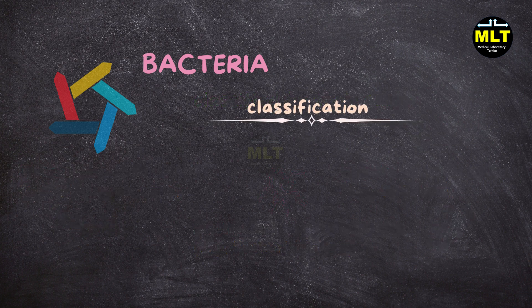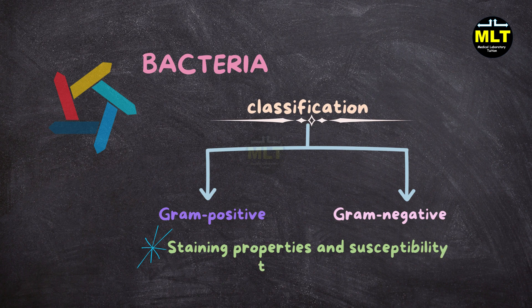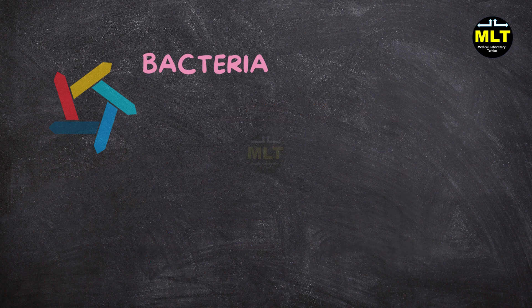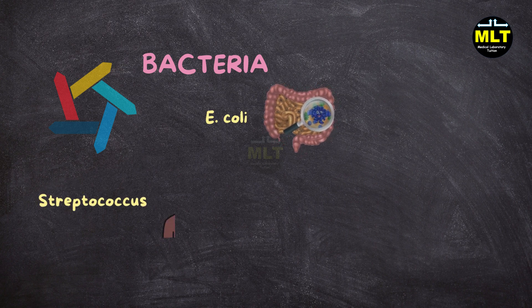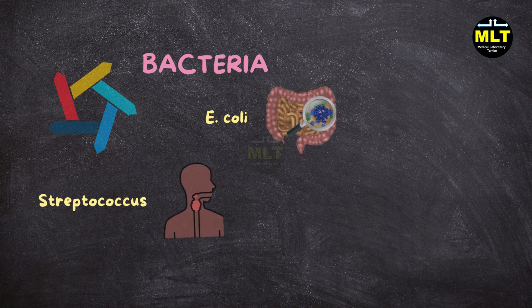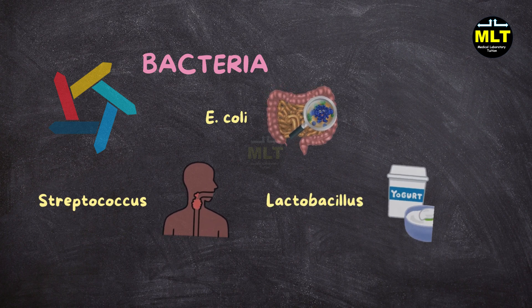Classification. Bacteria are commonly categorized as gram-positive or gram-negative based on their cell wall structure, which affects their staining properties and susceptibility to antibiotics. Notable bacteria include E. coli, a common intestinal bacterium that can be pathogenic; Streptococcus, responsible for various diseases including strep throat; and Lactobacillus, beneficial bacteria used in yogurt production.